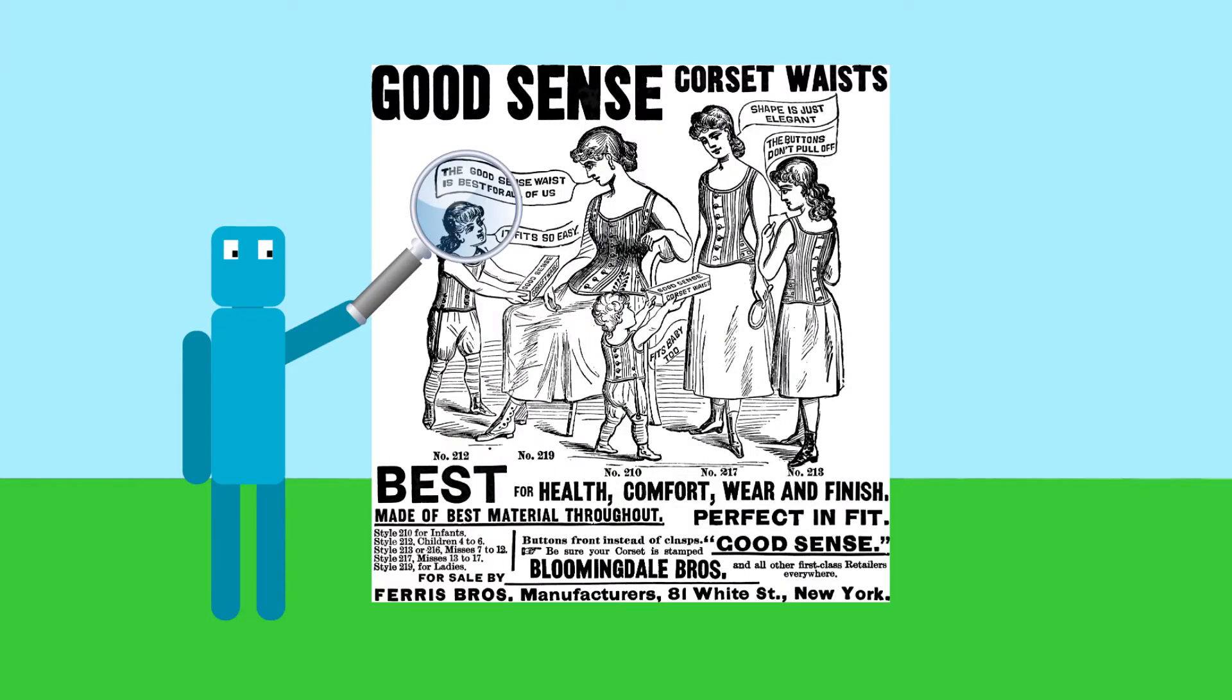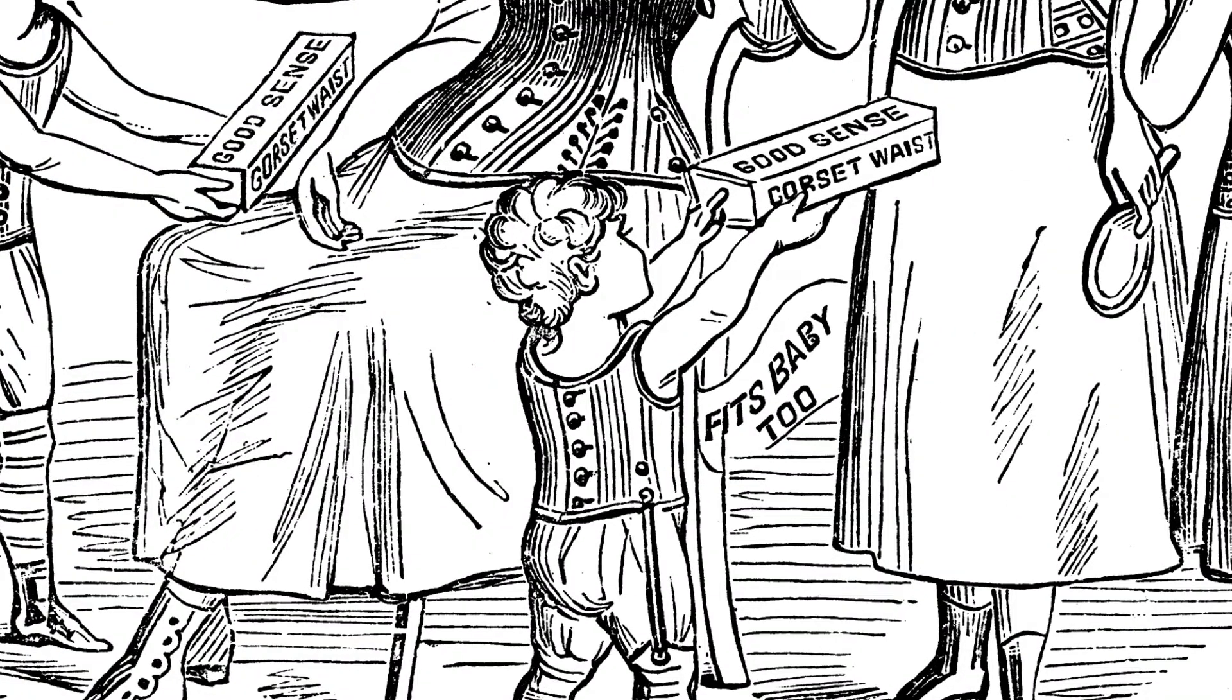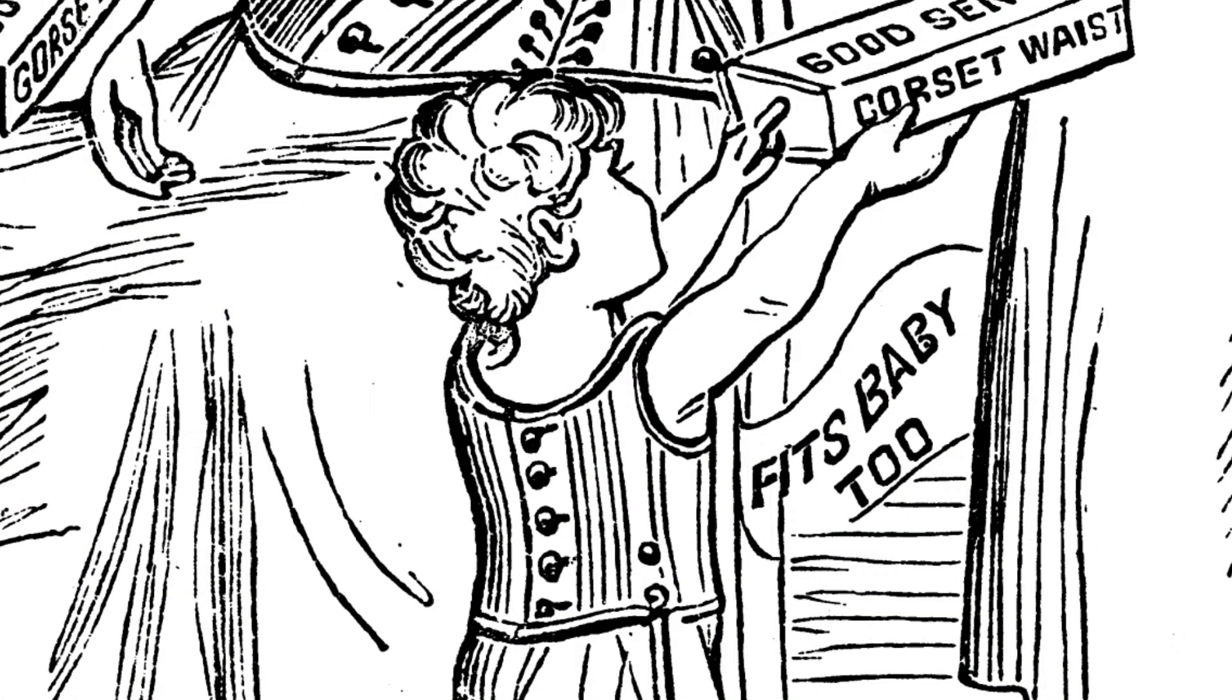This brings us to the question, why did Victorian women faint so much? Well, this was mainly due to corsets. They started wearing corsets from an incredibly young age. The corsets were incredibly tight, which meant that it was hard to breathe, and even their hearts struggled to pump blood.